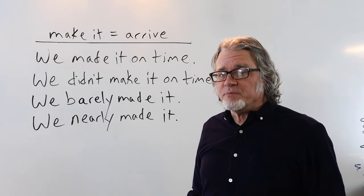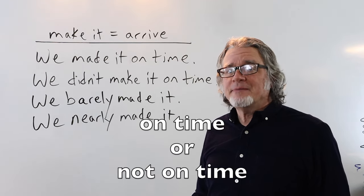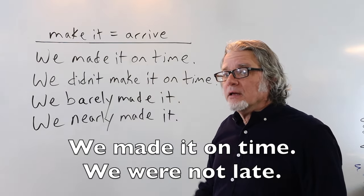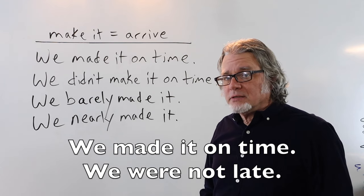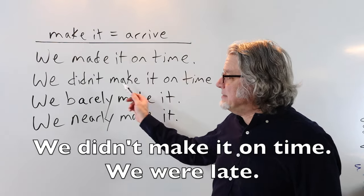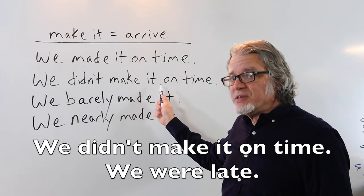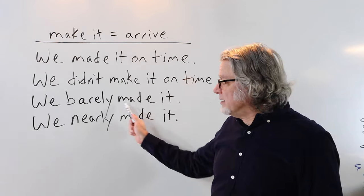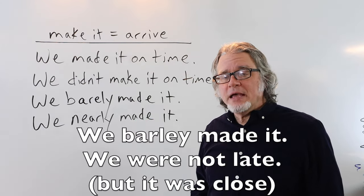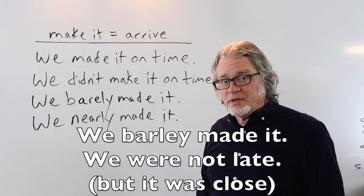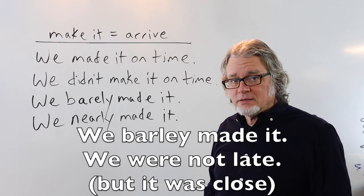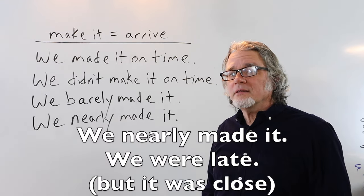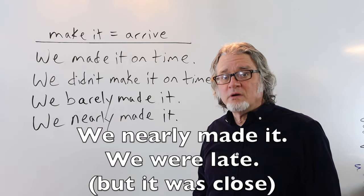Use make it when you arrive at a place on time or not on time. We made it on time means we were not late. We didn't make it on time means that we were late. We barely made it or we barely made it on time means we were not late. And we nearly made it means that we were late.